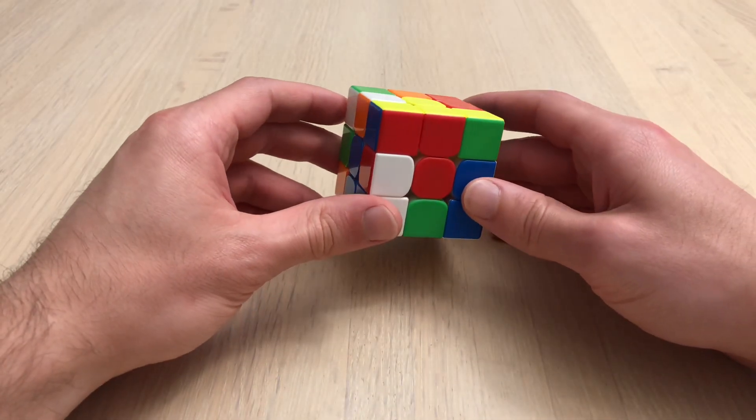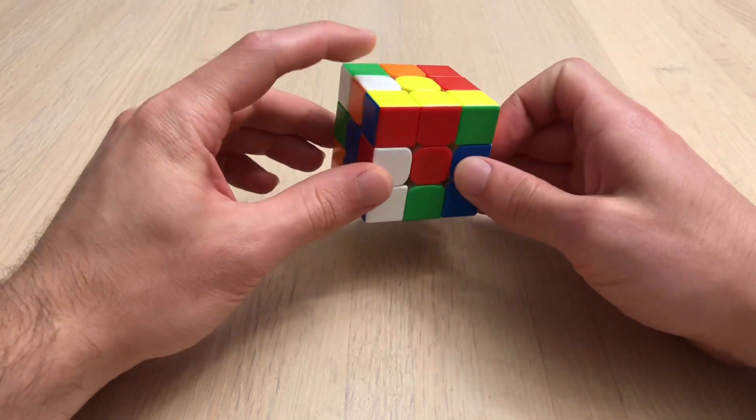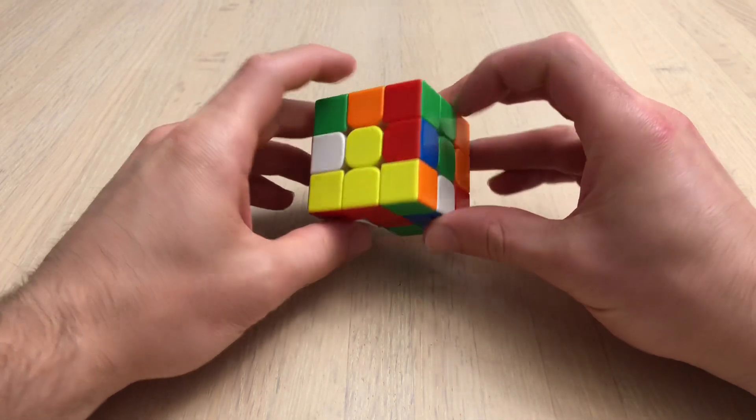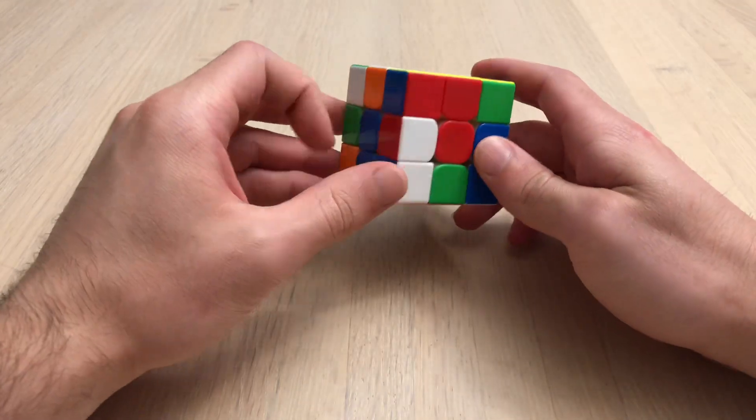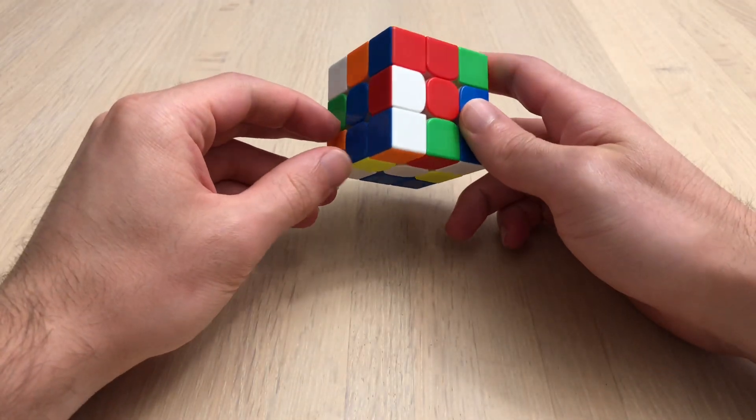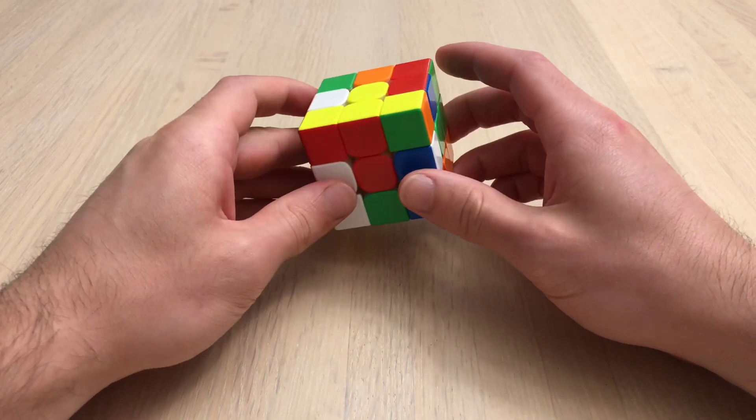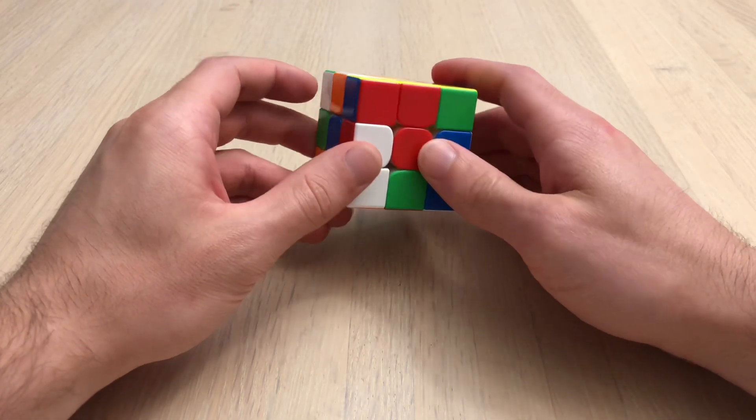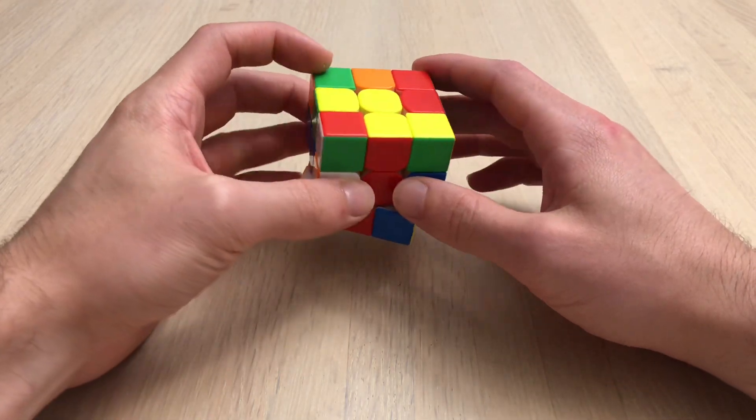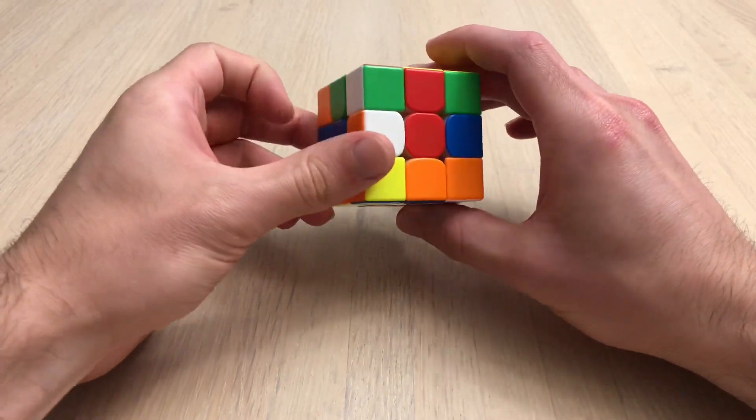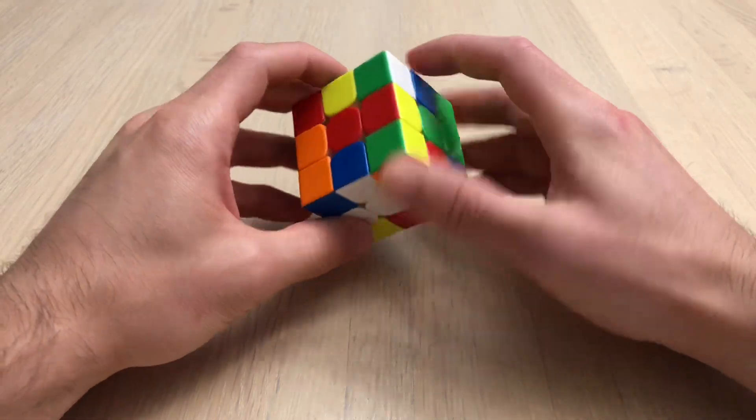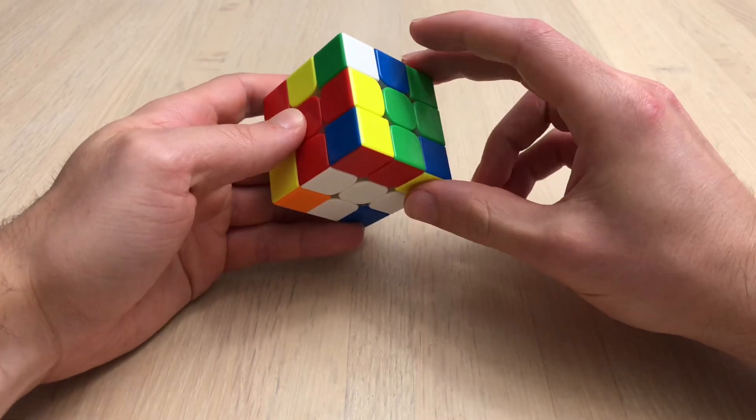Fourth scramble. I see these three cross edges and the fourth one is back here. So I'm going to start off by moving this down, D2, orange, blue, and then green.